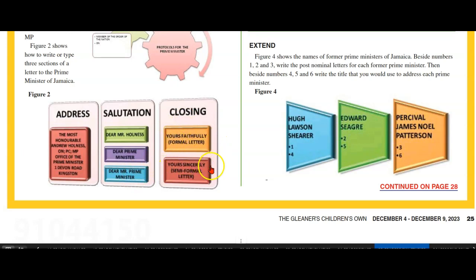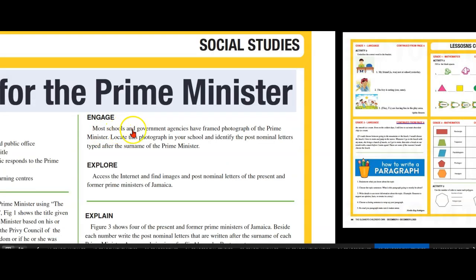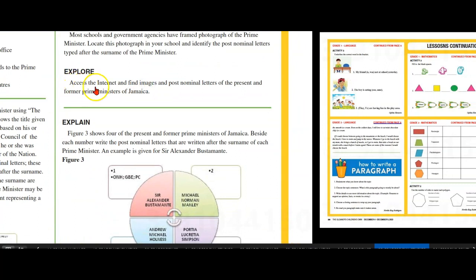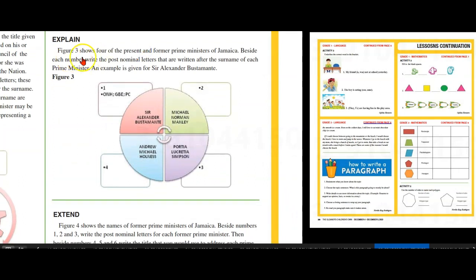Yours faithfully for a formal letter, and yours sincerely for a semi-formal letter. Most schools and government agencies have a framed photograph of the Prime Minister. Locate his photograph in your school and identify the post-nominal letters typed after the surname of the Prime Minister.